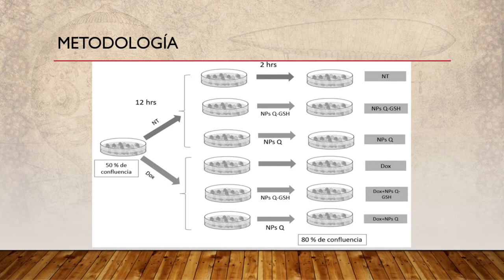Vamos a utilizar dos tipos de células, y en cada grupo tendremos células sin doxorrubicina y células con doxorrubicina. En las que no llevan doxorrubicina habrá tres tratamientos: células solas, nanopartículas de quitosán con glutatión, y nanopartículas de quitosán. En las tratadas con doxorrubicina habrá también tres tratamientos: doxorrubicina sola, nanopartículas de quitosán con glutatión, y nanopartículas de quitosán. En total, tendremos seis tratamientos para cada tipo de célula.